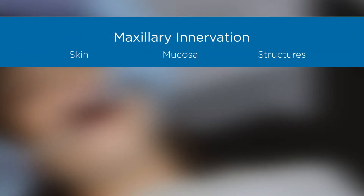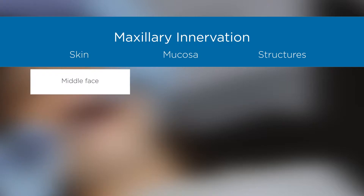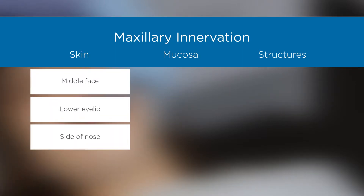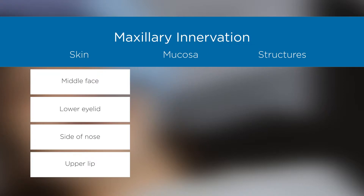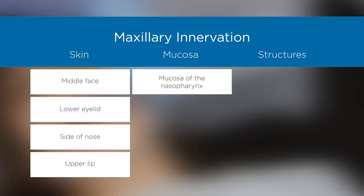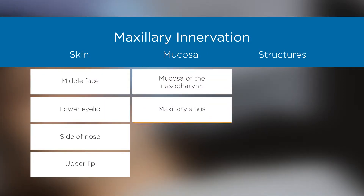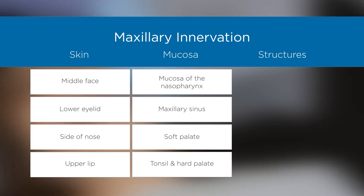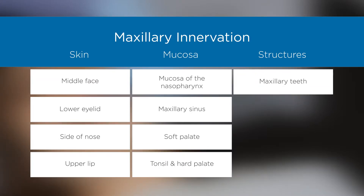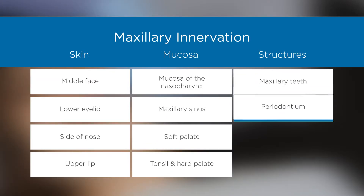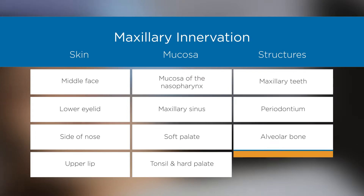The maxillary division of the trigeminal nerve is exclusively sensory and innervates the skin of the middle portion of the face, lower eyelid, side of nose, and upper lip; the mucosa of the nasopharynx, maxillary sinus, soft palate, tonsil, and hard palate; and the maxillary teeth, periodontium, alveolar bone, and gingiva.